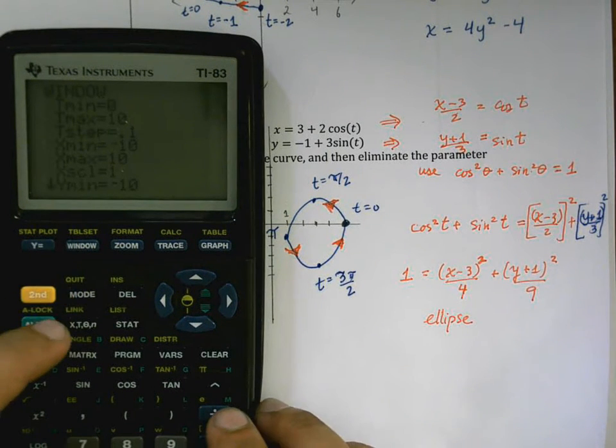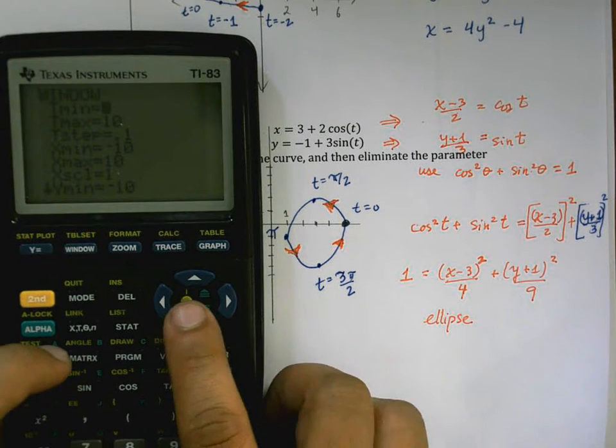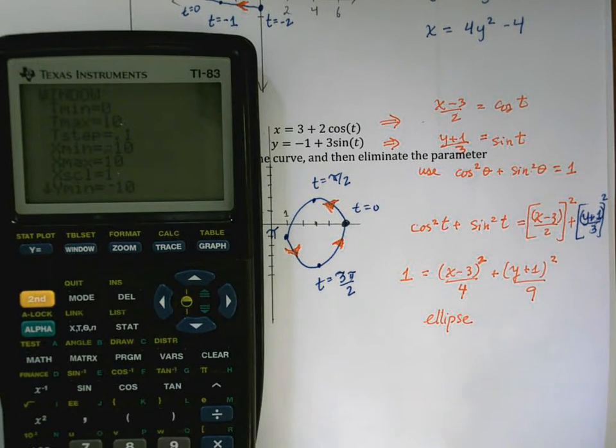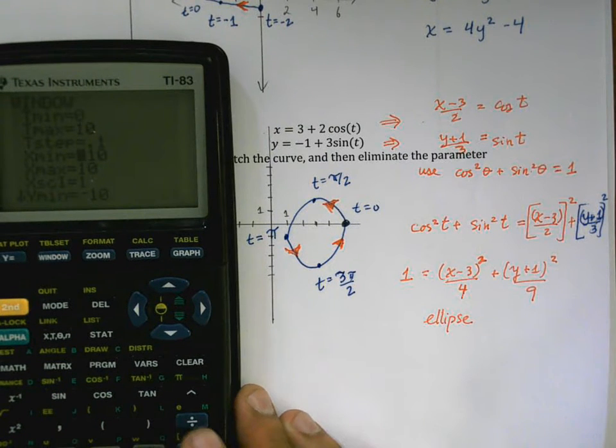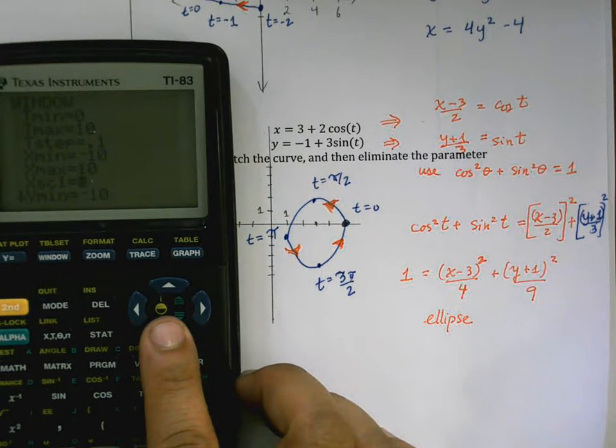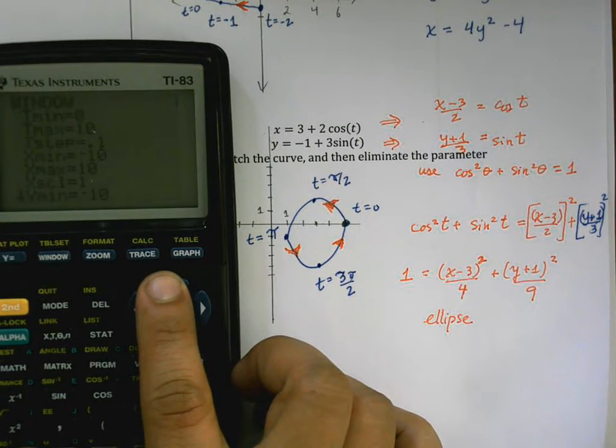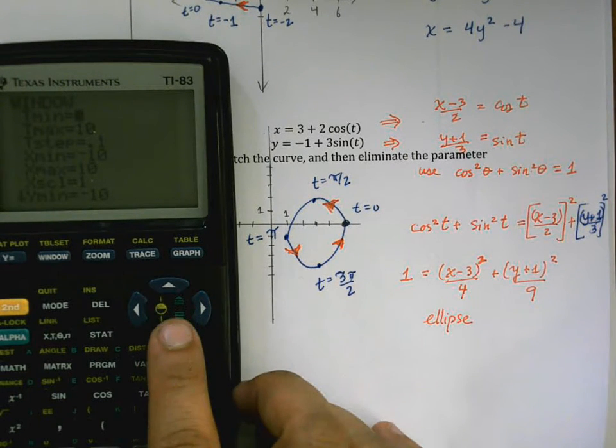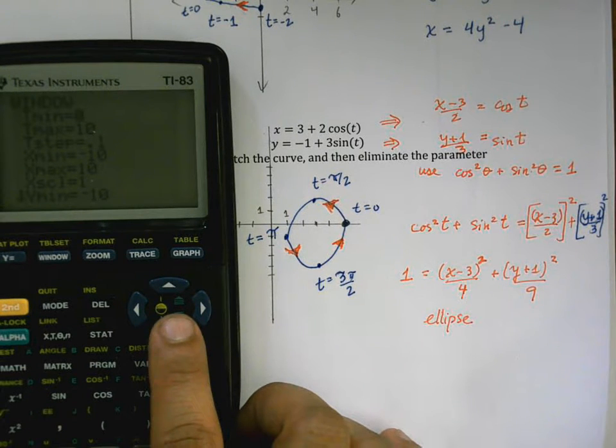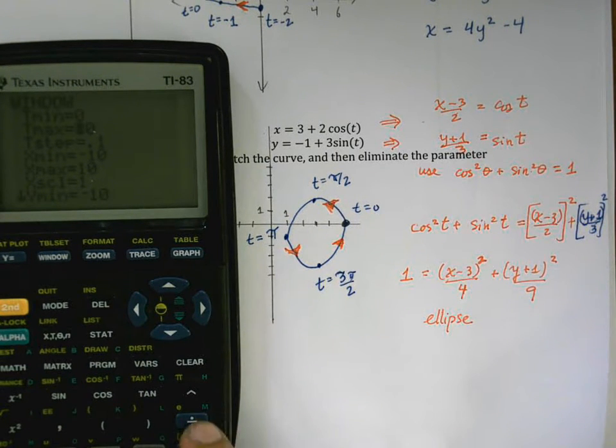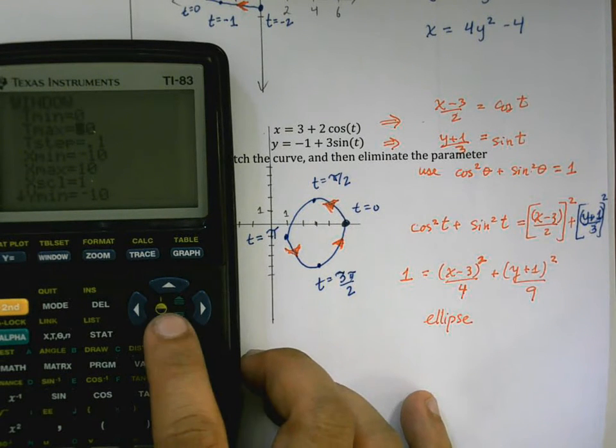When we go to the window, we have some interesting things. The t min is what t values to start at, so I'll start at zero. The t max, we went up to 2π but we can keep on going beyond that, there's nothing wrong with that.